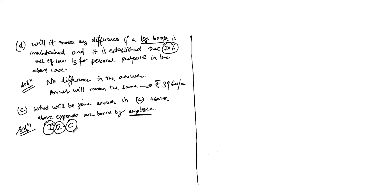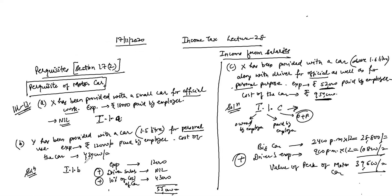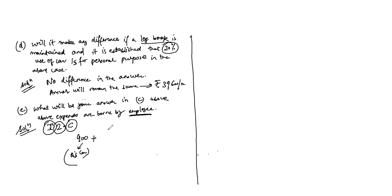For Part 1-2-C with a big car: ₹900 per month plus driver's salary ₹900 per month, multiply by 12. That gives ₹10,800 + ₹10,800 = ₹21,600. This is the value of perquisite for Part E.